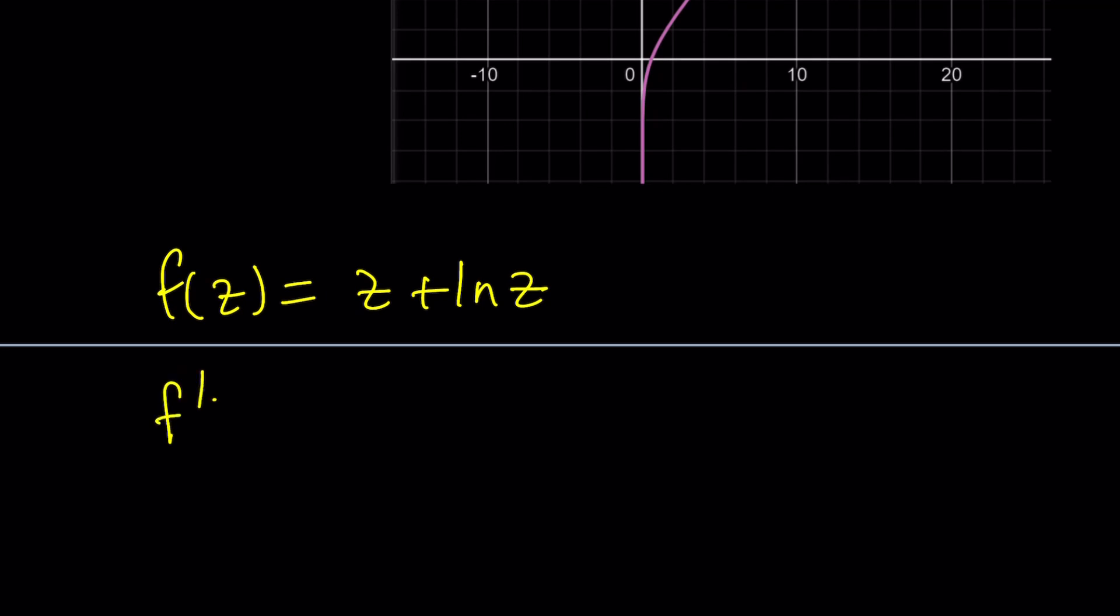If you differentiate this, you're going to get 1 plus 1 over z. So here's the thing. If we're talking about real numbers, if z is real, then z must be positive. As you know, the ln function doesn't accept, or it only accepts positive values. So 1 over z is going to be positive. 1 is already positive. 1 plus that is always going to be greater than 0. So since the first derivative is always positive, this function is going to be increasing. But of course,